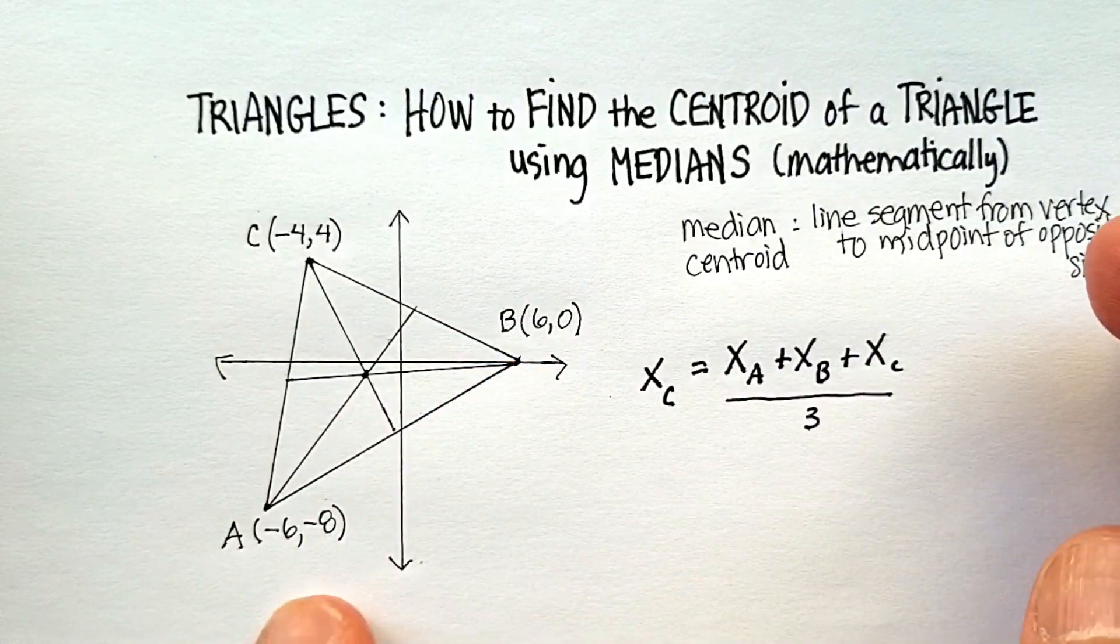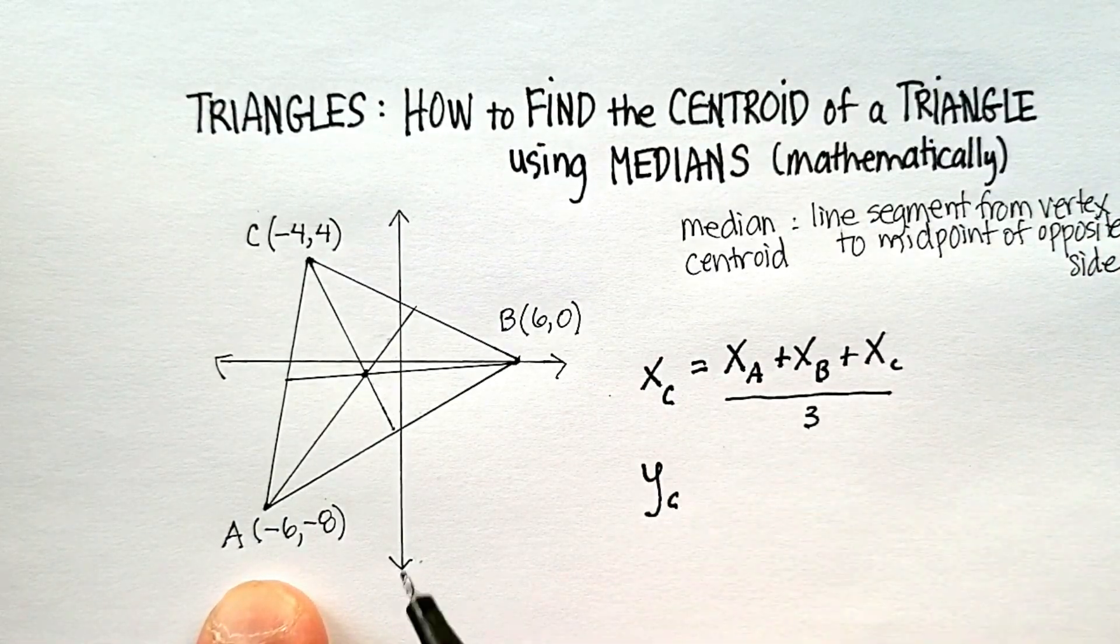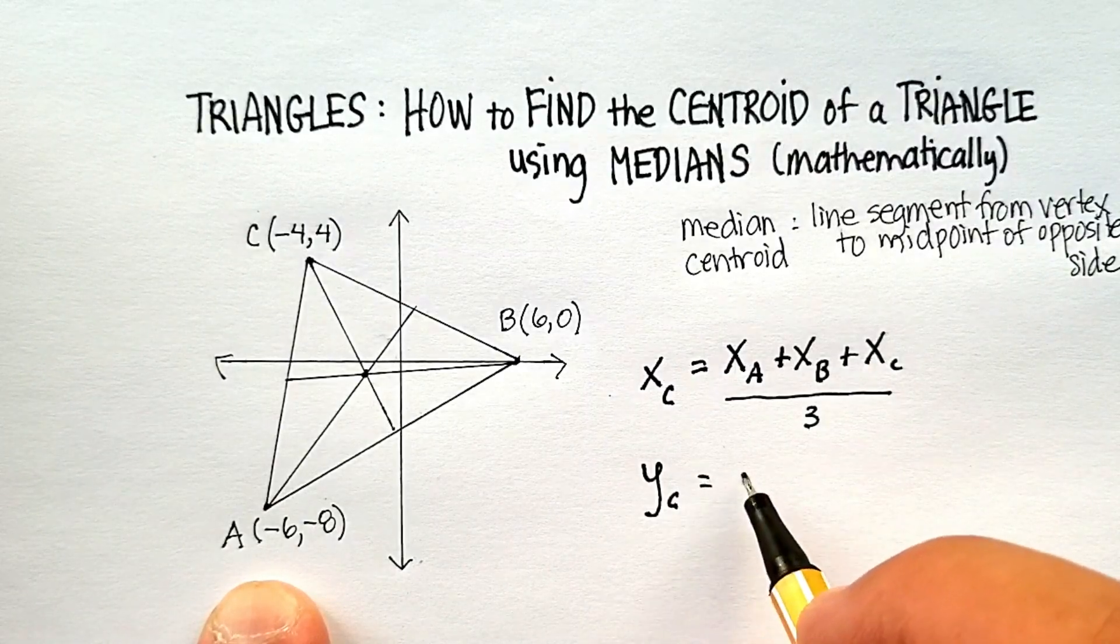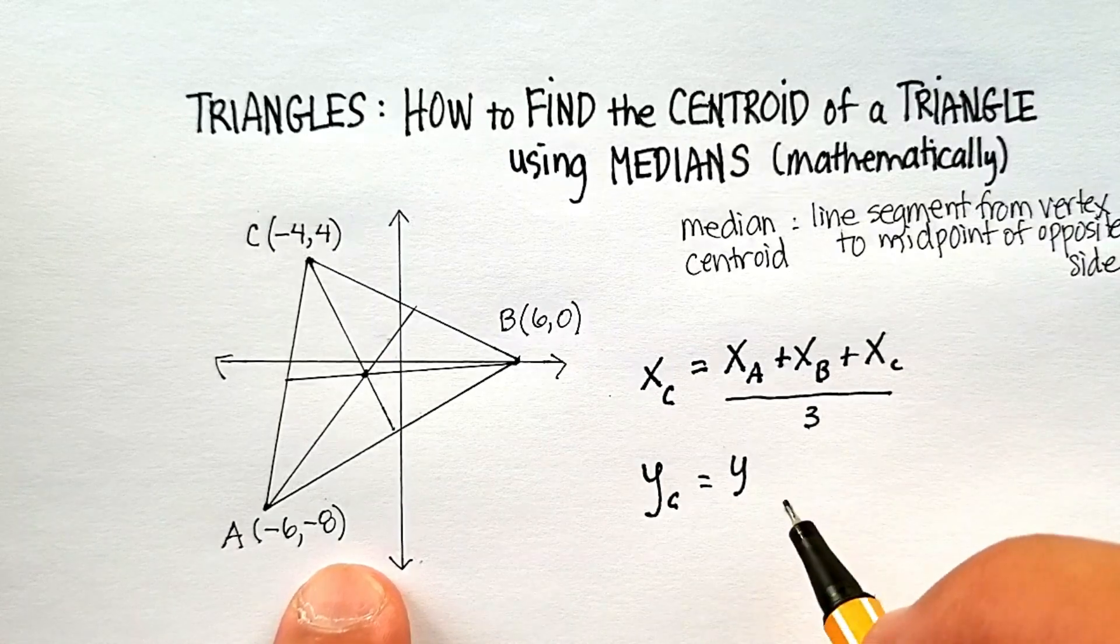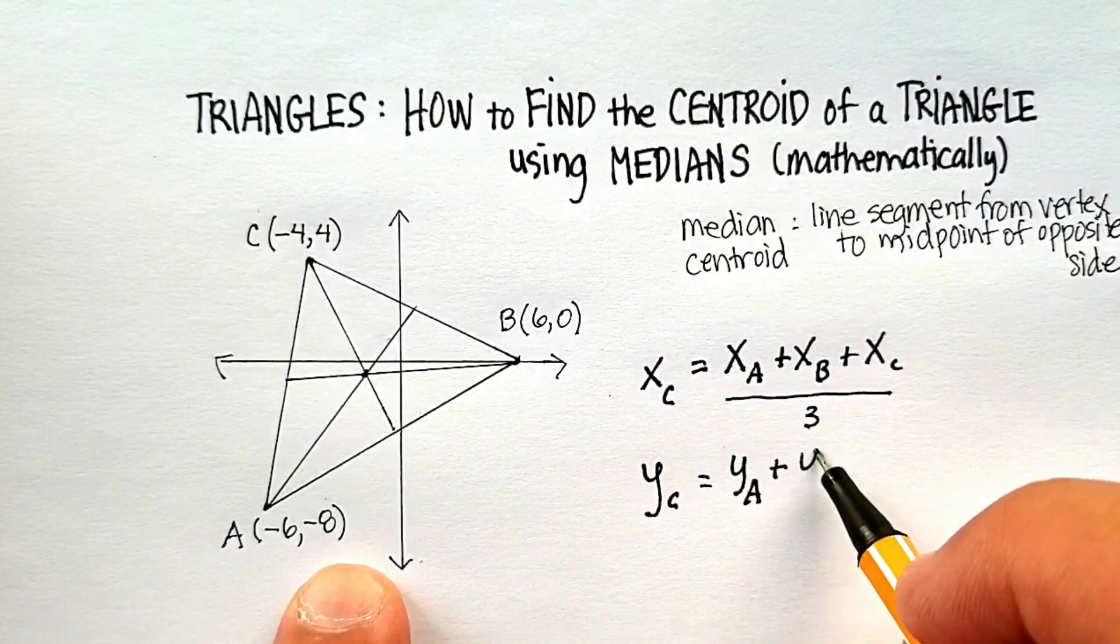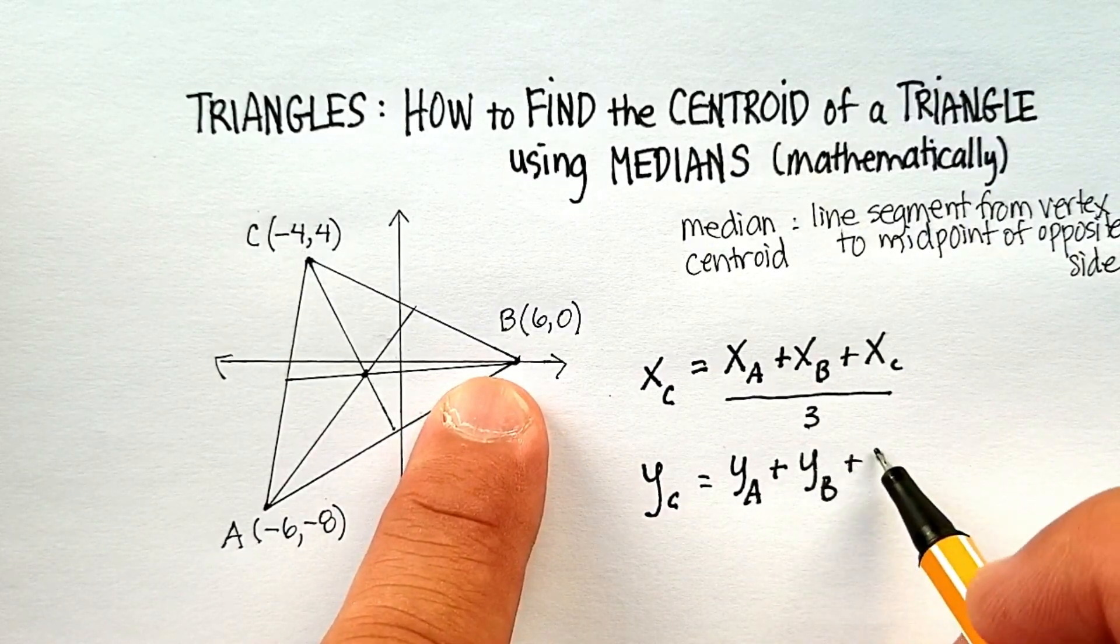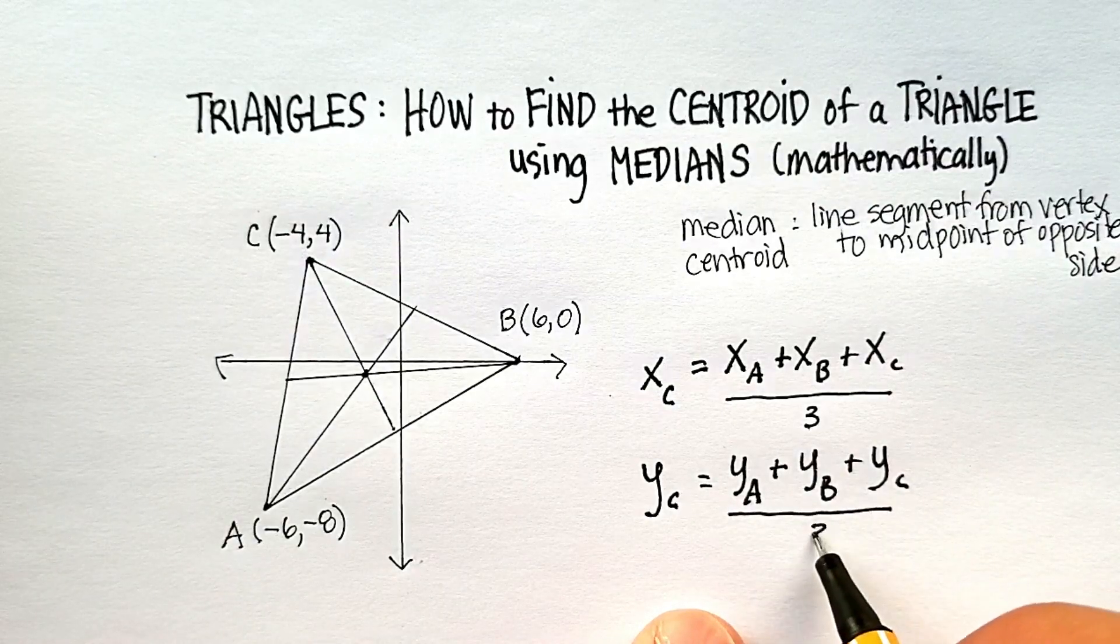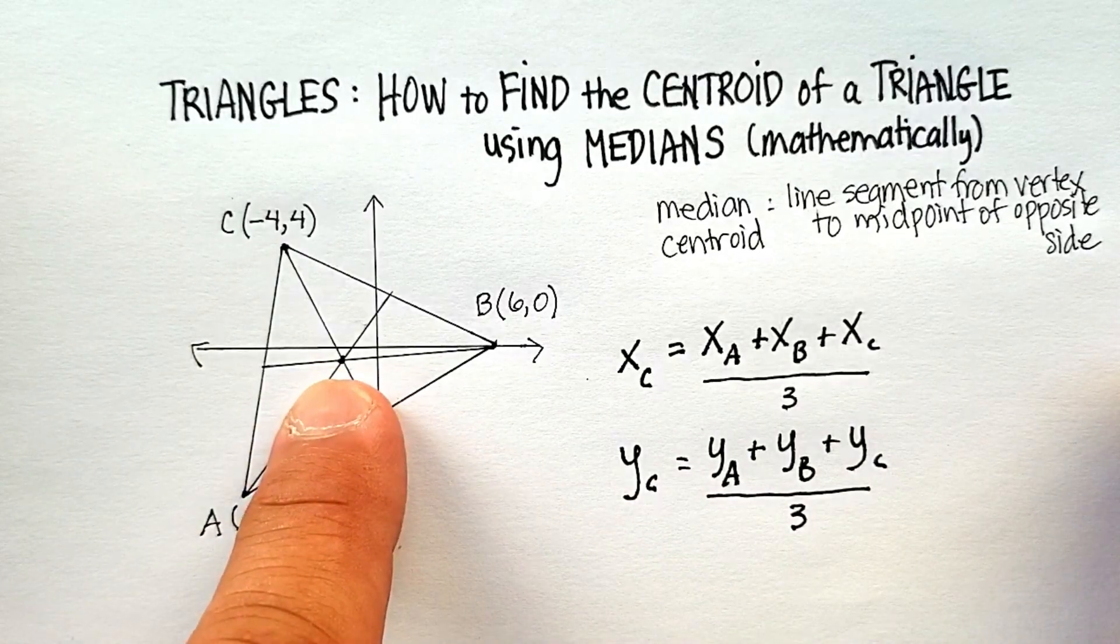Same thing with the y's. The y value for the centroid, it's right here, is going to be equal to the y value of the A coordinate, so sub a, plus the y value of the B coordinate, plus the y value of the C coordinate, again, all divided by 3. If we were to do that for this particular triangle, let's just substitute in our numbers.